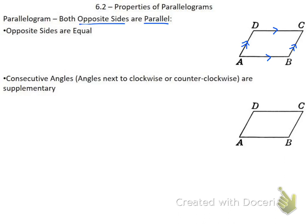The first property of parallelograms is that opposite sides are always equal to each other. In that same picture, we can put a single line through the top and the bottom, and then double lines through the left and the right to indicate that opposite sides are equal to each other.